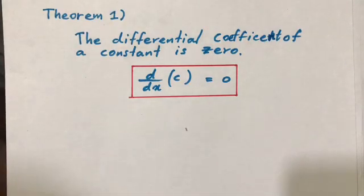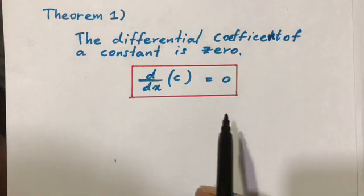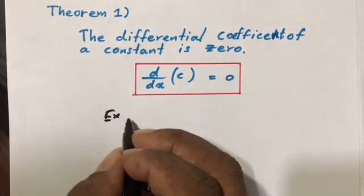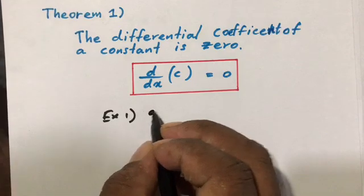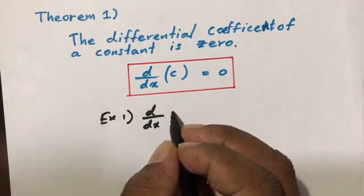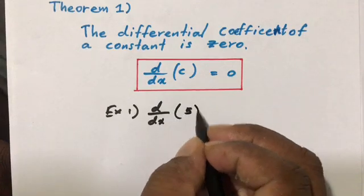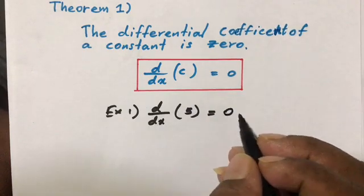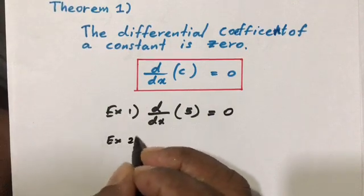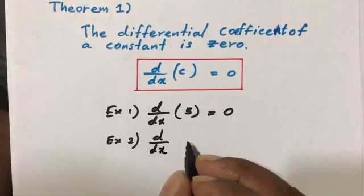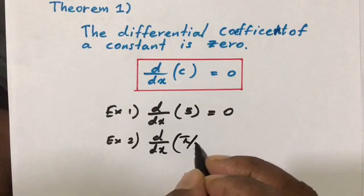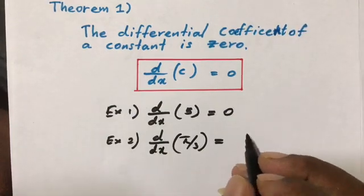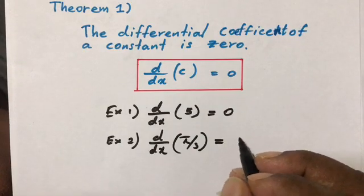Theorem number one: the differential coefficient of a constant is 0. For example, the derivative of 5 is 0, since 5 is a constant. Another example: d/dx of 5/3 — since 5/3 is a constant, the derivative of 5/3 is equal to 0.